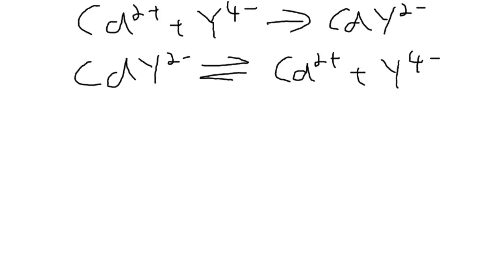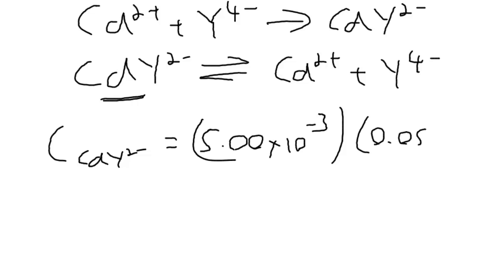In order to do an ICE table we need to know the initial concentration of the complex, and we can do that either by calculating the number of moles of cadmium initially or the number of moles of EDTA added and divided by the total volume. So let's do it by figuring out the number of moles of cadmium in the solution. So this is the concentration of cadmium complex with EDTA. We're going to say that's equal to the number of moles of cadmium that we started with which was 5 times 10 to the minus 3 times the volume of cadmium that we started with which was 50 milliliters or 0.05 liters.